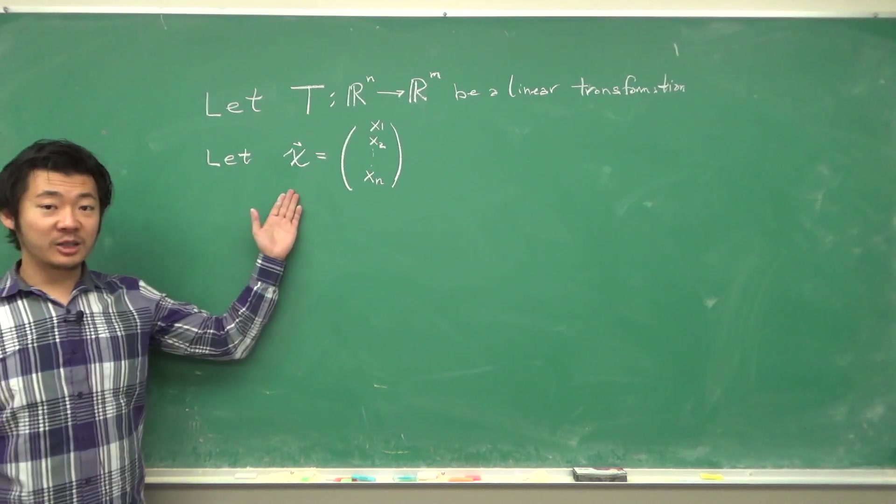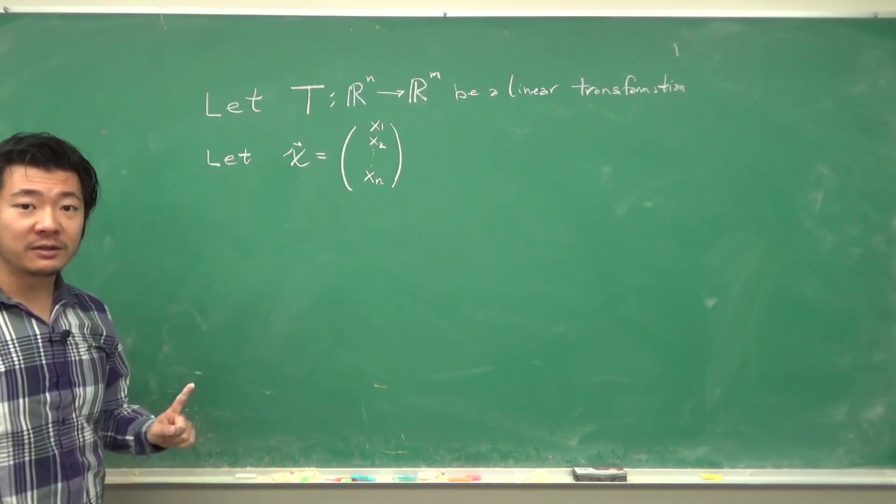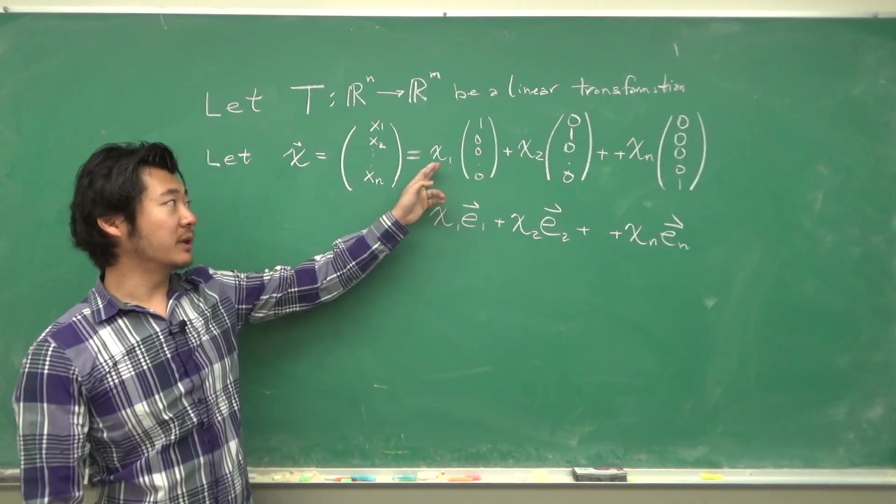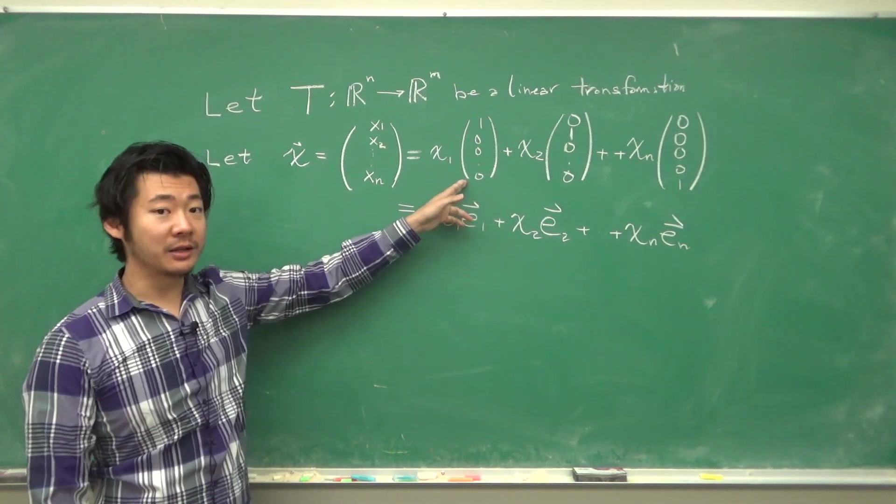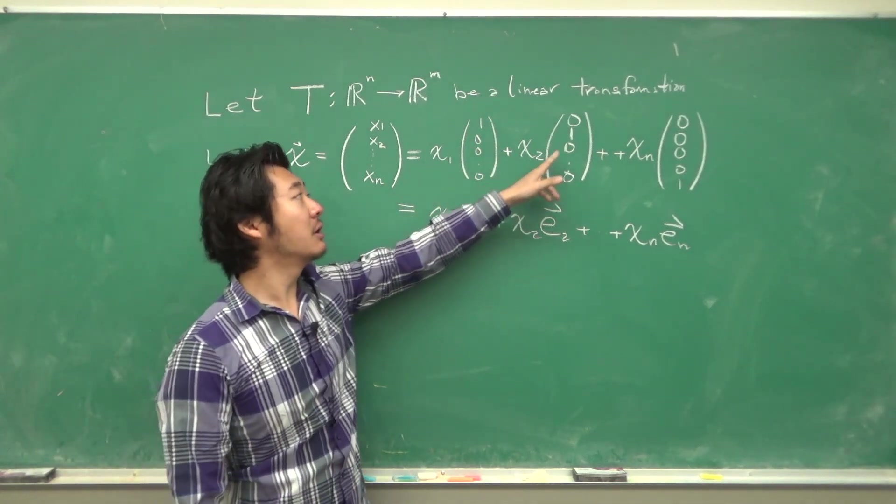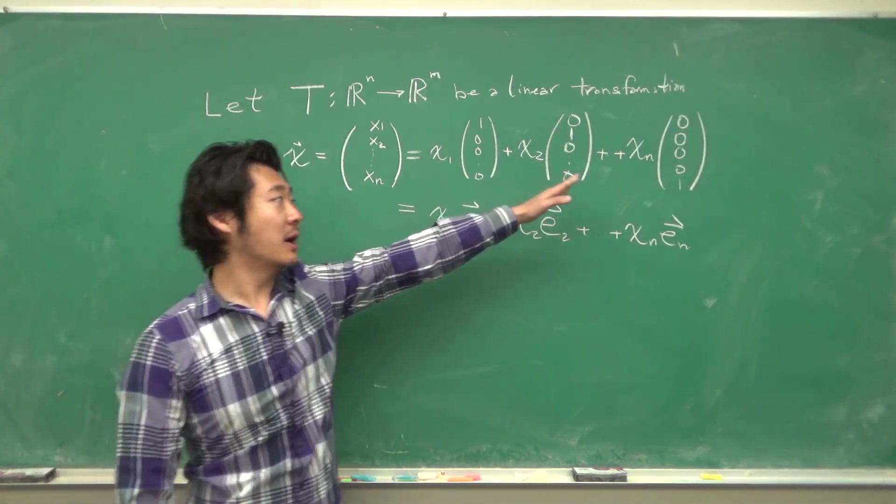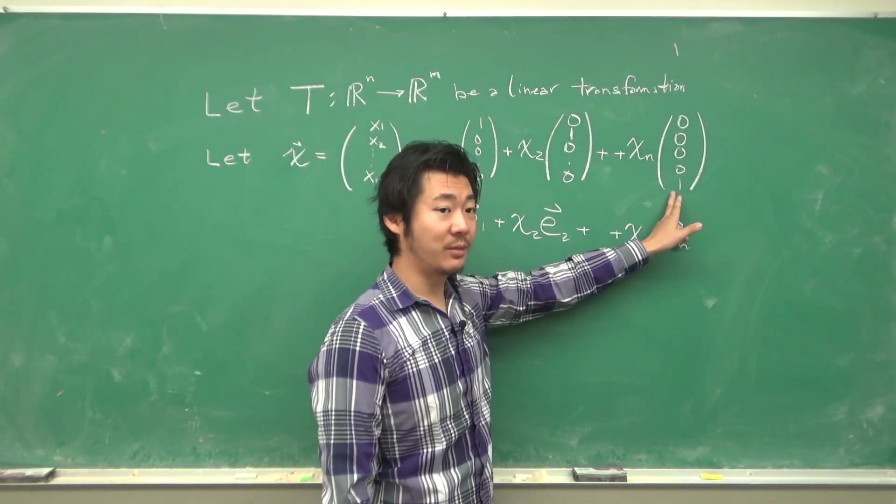Next, let x be the vector (x₁, x₂, ..., xₙ). We can rewrite this vector as the following linear combination: x₁ times the vector (1, 0, ..., 0) plus x₂ times (0, 1, 0, ..., 0) all the way to xₙ times the vector (0, ..., 0, 1).